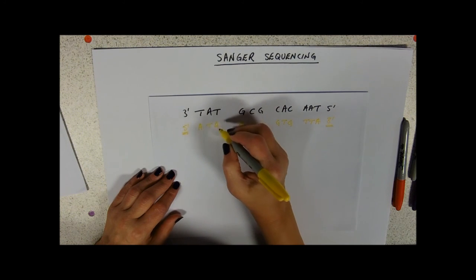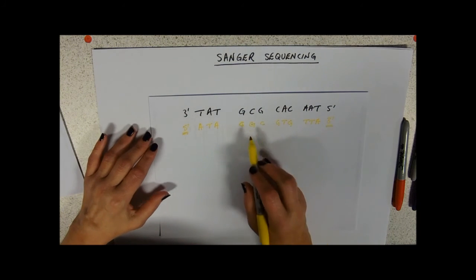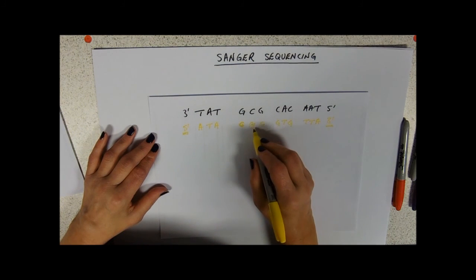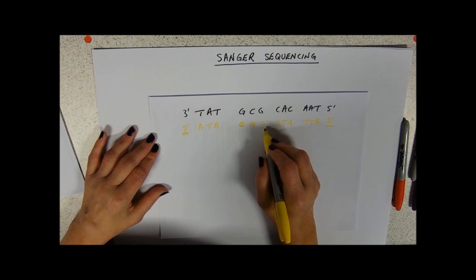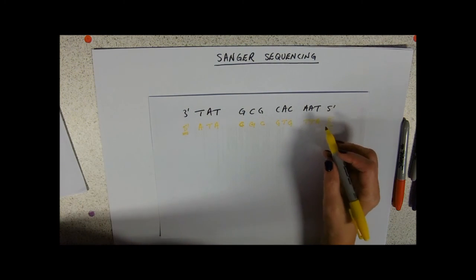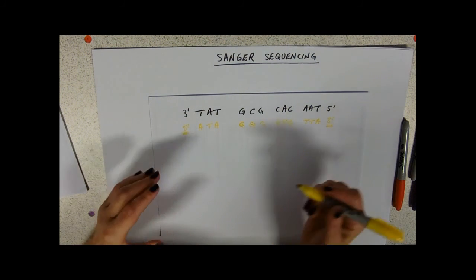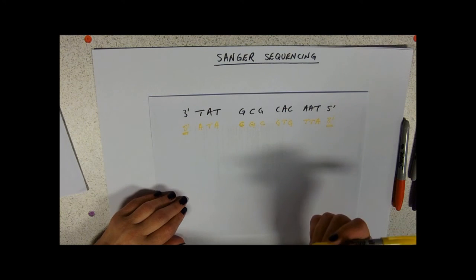An A will be added first, followed by a T, followed by an A, followed by a C, followed by a G, followed by a C, followed by a G, followed by a T, followed by a G, followed by a T, followed by a T, followed by an A. So they will be added on one at a time.